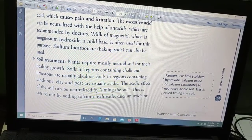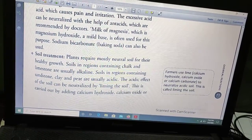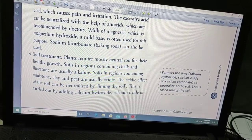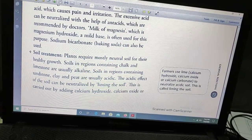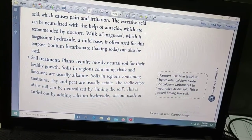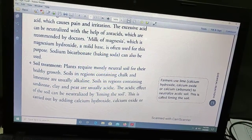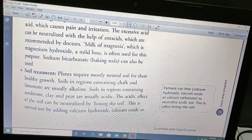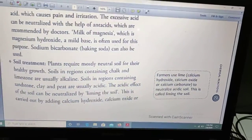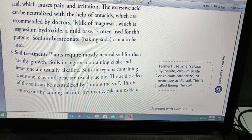We can use limestone. We call the process liming of soil. Farmers generally use lime, calcium hydroxide, calcium oxide, and calcium carbonate to neutralize acidic soil so that the soil neutrality is maintained and crops are grown in better production. That is the second application.